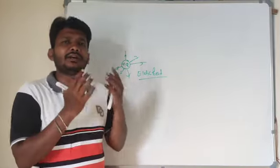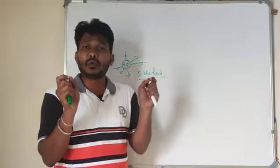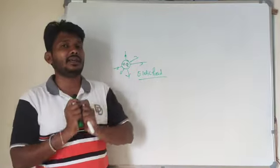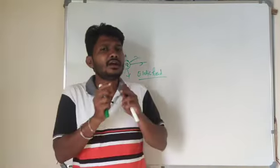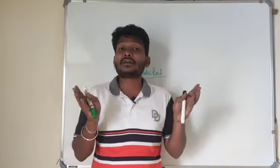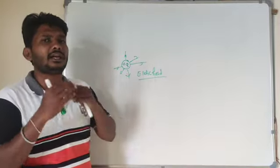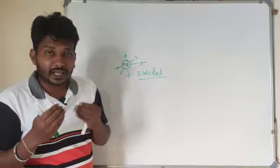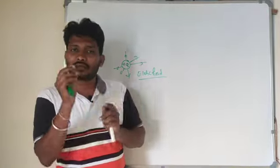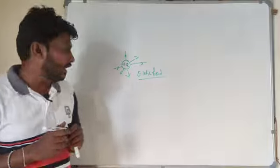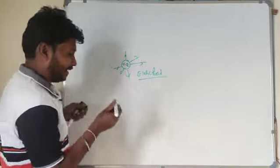Before we enter into the fourth chapter, let me explain the Oersted experiment. Oersted is the name of a scientist who discovered properties of electrodynamics. He performed a small experiment. After explaining the Oersted experiment, we will give the title to the fourth chapter.